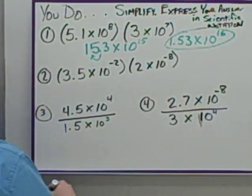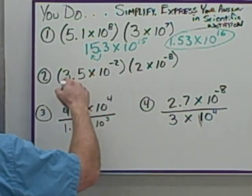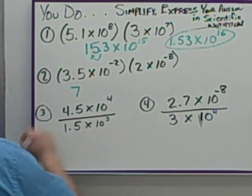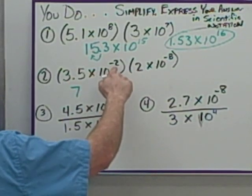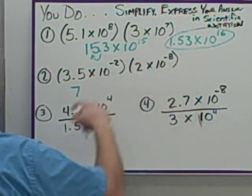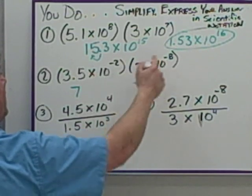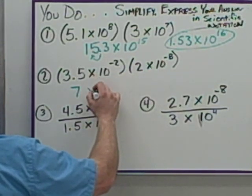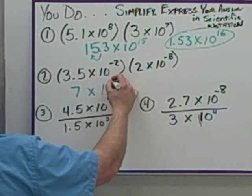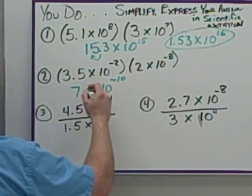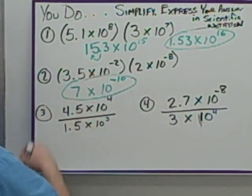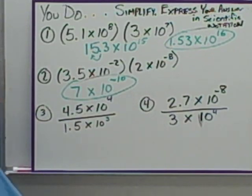And that's my answer for number one. Number two, we're going to do 2 times 3.5, which gives us 7. Adding these exponents, when you add two negatives, you add the two numbers. 2 plus 8 is 10. Negative is going to be the answer, so we're going to have 7 times 10 to the negative 10. I do not need to simplify this further because this is between 1 and 10. We're good.